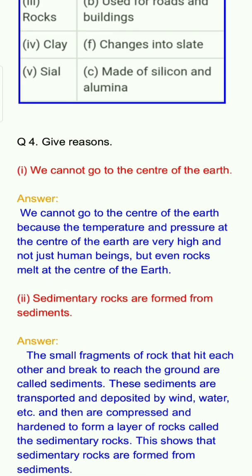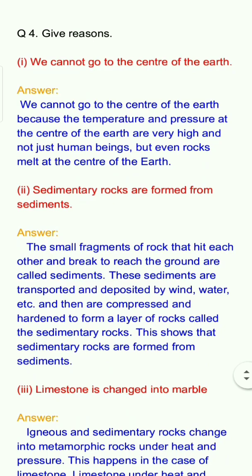Question 2: Sedimentary rocks are formed from sediments. Answer: The small fragments of rock that break and reach the ground are called sediments. These sediments are transported and deposited by wind, water, etc., and then are compressed and hardened to form a layer of rocks called sedimentary rocks.